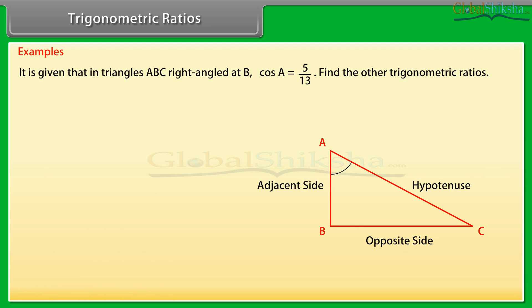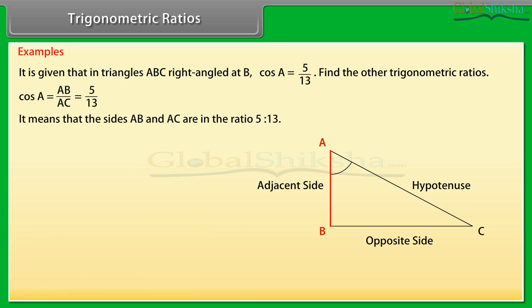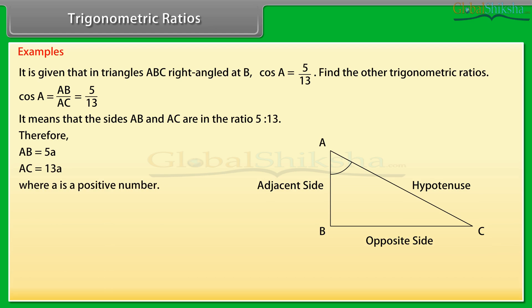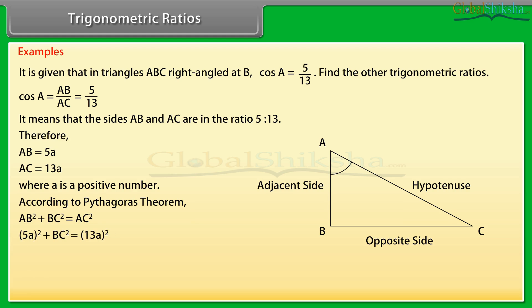Example: it is given that triangle ABC is right angled at B and cos A equals 5 upon 13. Find the other trigonometric ratios. Cos A equals AB upon AC, which is 5 upon 13. It means that sides AB and AC are in the ratio 5 to 13. Therefore, AB equals 5a and AC equals 13a, where a is a positive number. According to Pythagoras theorem, AB² plus BC² equals AC². By substituting the values, we get 5a² plus BC² equals 13a².